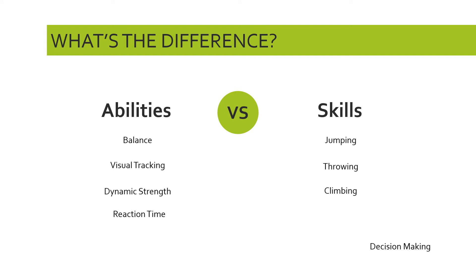Decision making: is it something we are born with or something we learn over time? Decision making is something we learn over time. The elements that allow us to make decisions — such as our cognitive abilities — are abilities, but the decision making itself is learned and we become more proficient with it. Skills don't necessarily have to be exclusively motor skills; decision making is also a skill, but we consider this a cognitive skill rather than a somatic or body skill.